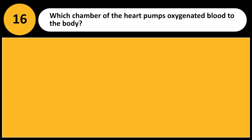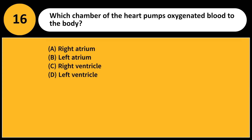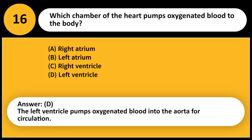Which chamber of the heart pumps oxygenated blood to the body? A. Right atrium. B. Left atrium. C. Right ventricle. D. Left ventricle. Answer: D. The left ventricle pumps oxygenated blood into the aorta for circulation.